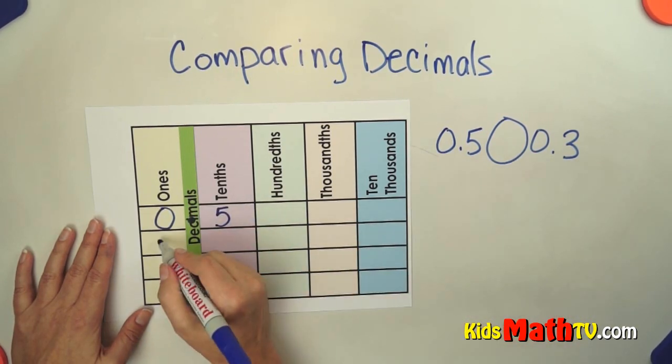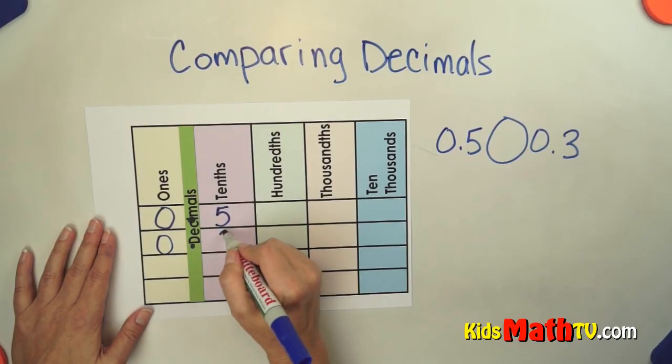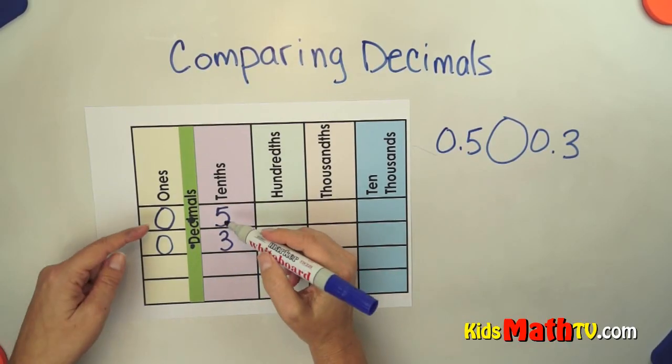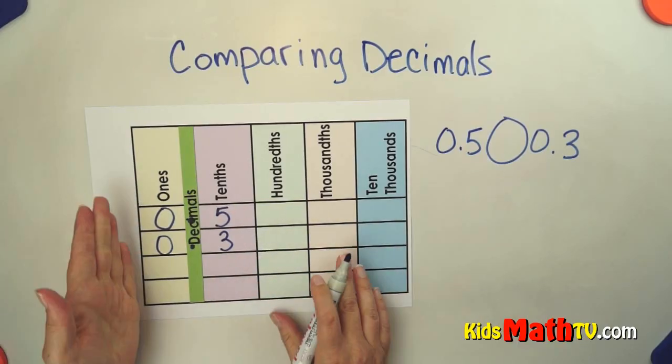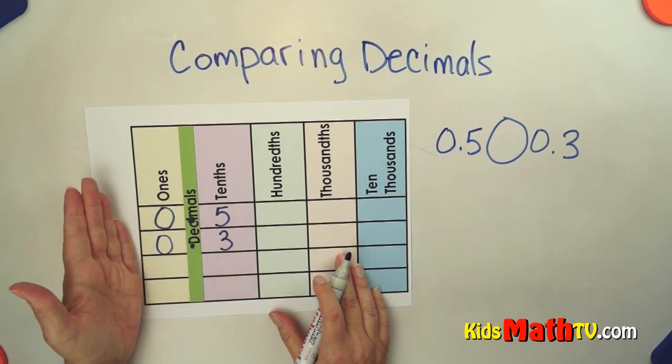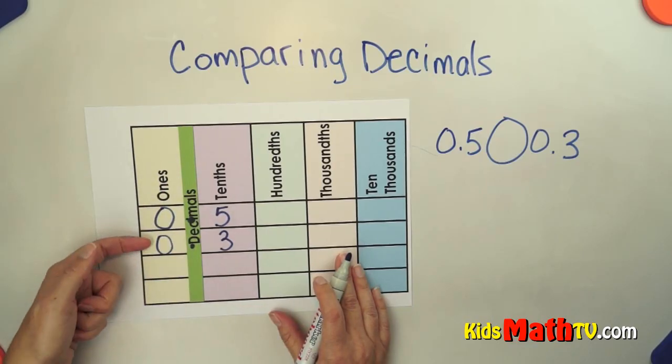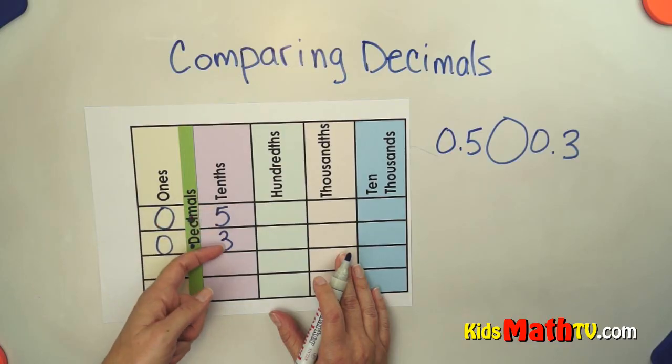We're going to compare that to 0.3. There are no ones. I'm going to start from the left and compare the ones first. The ones are both 0, so that doesn't help me. So I go to my tenths. I have 5 tenths or 3 tenths.